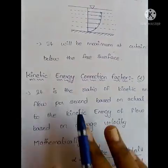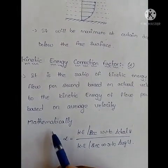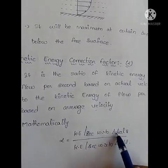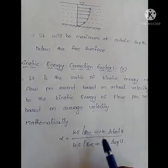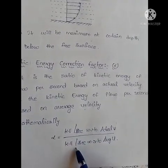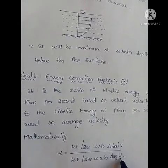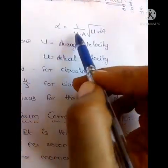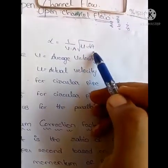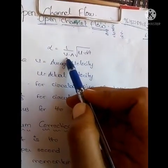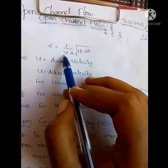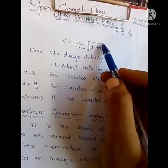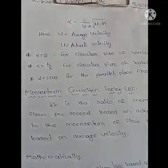The kinetic energy correction factor is represented by alpha (α). Alpha is equal to kinetic energy flow per second with respect to actual velocity divided by kinetic energy flow per second with respect to average velocity. The formula is: alpha (α) = (1/V) × integral of u² dA, where V is the average velocity and u is the actual velocity.